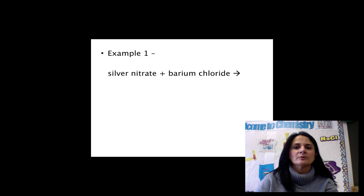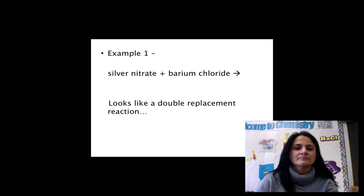In our first example, we see that we have the reactants silver nitrate and barium chloride. We have two compounds as reactants. Think about what reaction type that might be. Looks like a double replacement reaction.